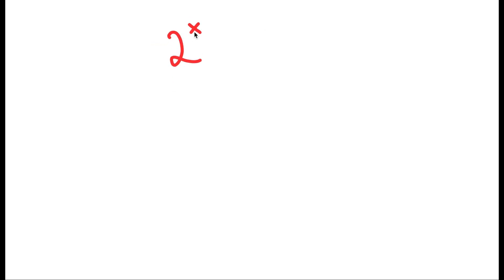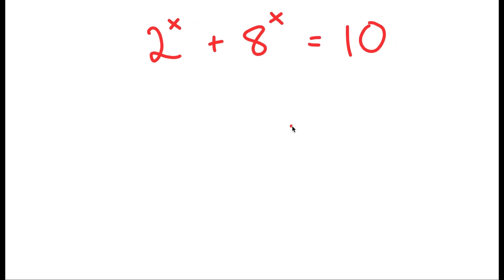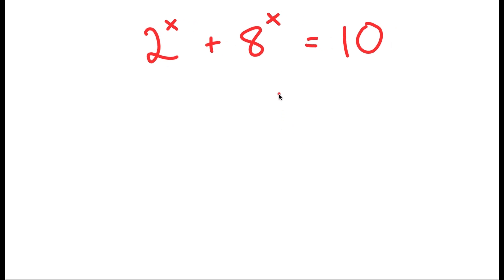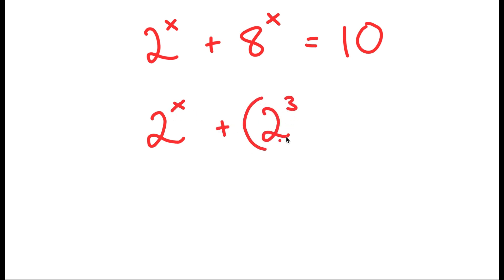In this video, I'm going to solve the equation 2 to the power of x plus 8 to the power of x is equal to 10. So to solve this, I'm going to first start by rewriting 8 as 2 to the power of 3. So I get 2 to the power of x plus 2 to the power of 3 to the power of x is equal to 10.